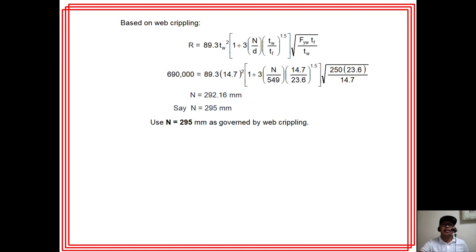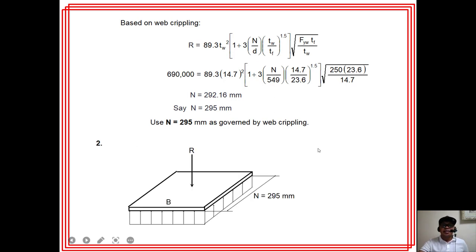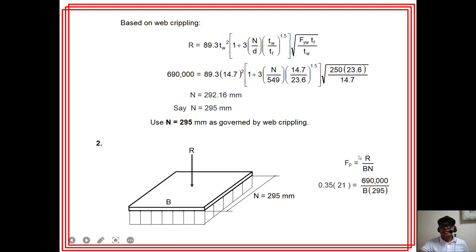Step 2 — solving for B: Since the plate fully covers the concrete support, fp = 0.35fc' = 0.35 × 21 = 7.35 MPa. Using fp = R/(B×N): B = R/(fp × N) = 690,000/(7.35 × 295) = 318.22 mm. Use B = 320 mm.